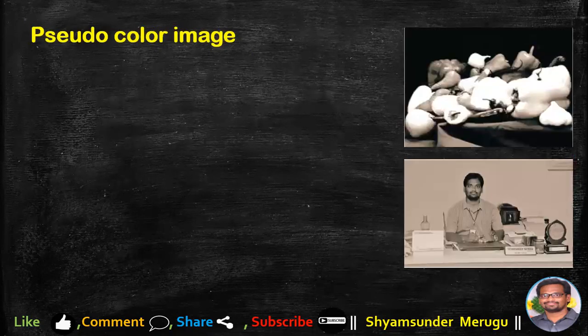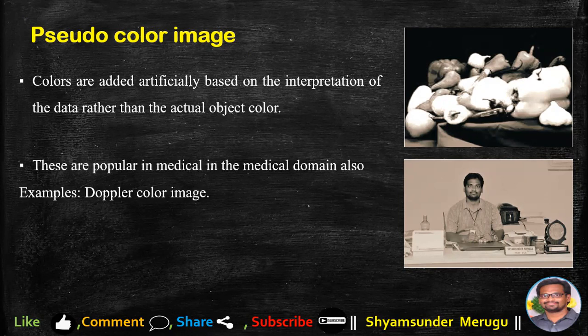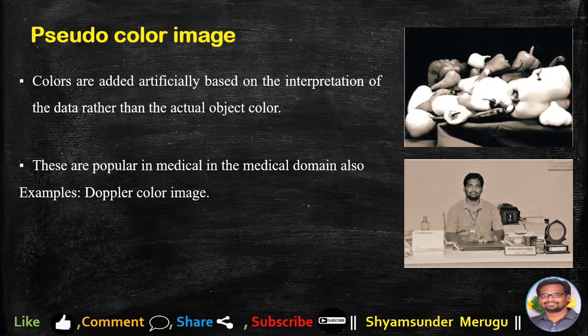The last one is pseudo color image. Here are the example images for pseudo color images. If colors are added artificially based on the interpretation of the data rather than the actual object color, they will come under pseudo color images. These are popular in the medical domain also. The examples for pseudo color images are Doppler color images.